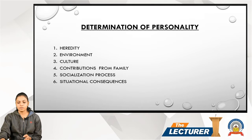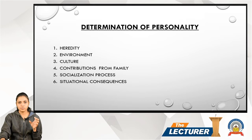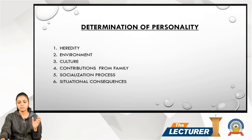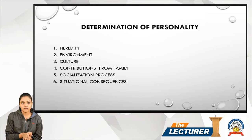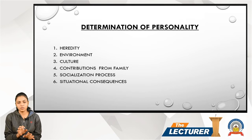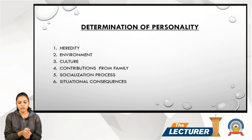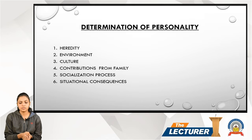Fifth is the socialization process. Personality is influenced throughout one's life, not only during childhood. The socialization process starts with the mother initially, but later the father, brothers, sisters, close friends, and relatives also influence a person's personality. Peers who share social groups also play a role.